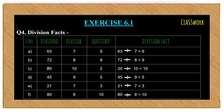For example, in question a, the dividend is 63, the divisor is 7, and the quotient is 9. So the division fact will become 63 divided by 7, giving us the quotient or the answer as 9.